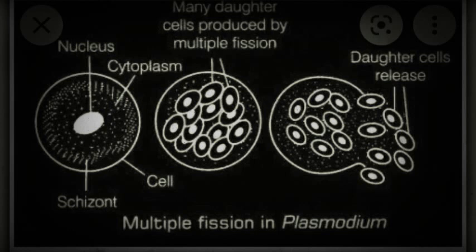Division of the nucleus successively into a number of daughter nuclei, followed by a division of the cell body into an equal number of parts, each containing a nucleus, is known as multiple fission. If you like this video, like, share, and subscribe. Thank you for watching!